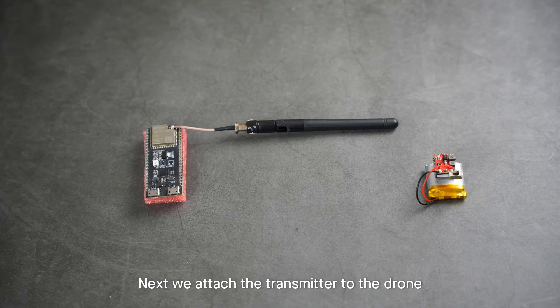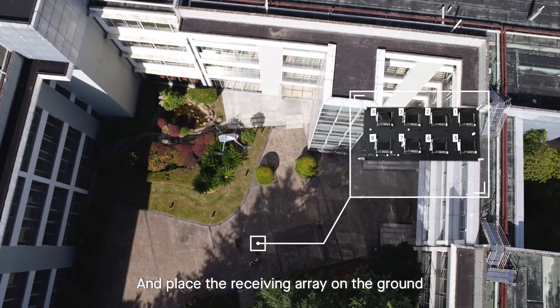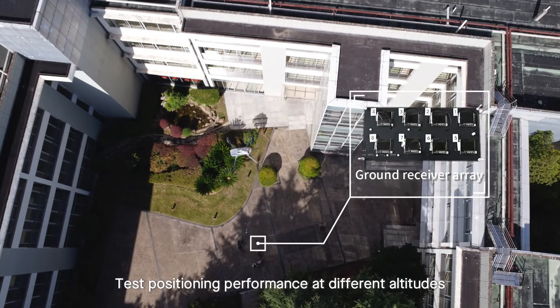Next, we attach the transmitter to the drone and place the receiving array on the ground to test positioning performance at different altitudes.